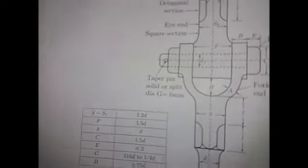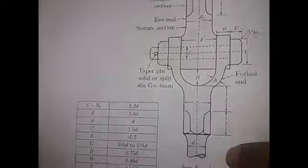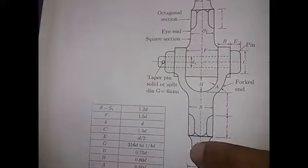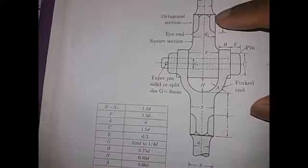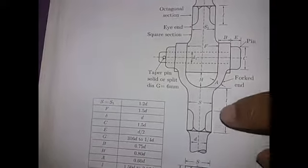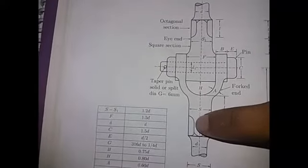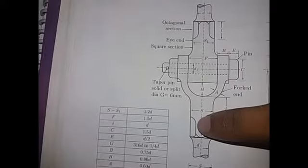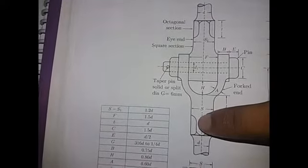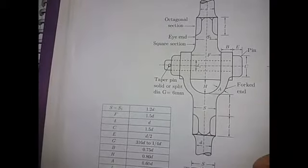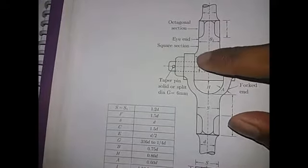This is the diameter of the solid rod. This is the side of square. This is the thickness of I.